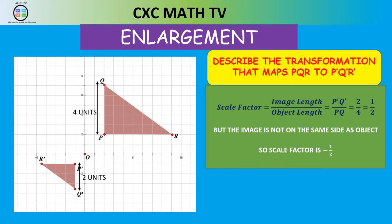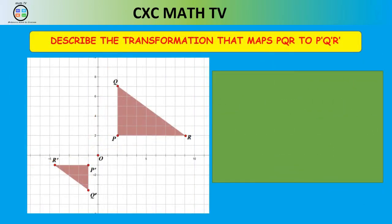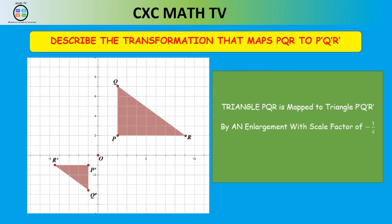Drawing lines through Q and Q prime, P and P prime, R and R prime, all lines intersect at the origin. So the center of enlargement is the origin. Triangle PQR is mapped to triangle P prime Q prime R prime by an enlargement with scale factor negative one half and center of enlargement at the origin.